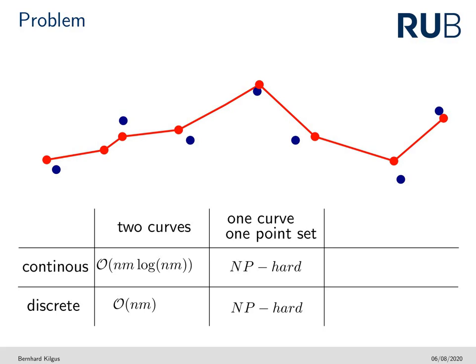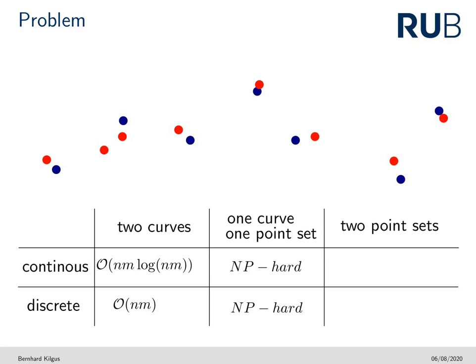We now move one step further and consider the setting where no curve is given but two point sets only. We ask: can we find two curves with the points as vertex sets that are within Fréchet distance or discrete Fréchet distance at most epsilon? We denote the Fréchet distance or discrete Fréchet distance respectively between the point sets as the smallest possible value of epsilon.